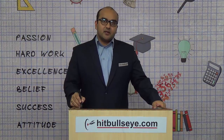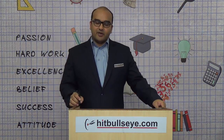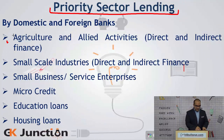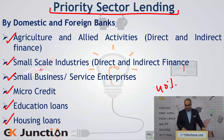The government of India understands that certain sectors of the economy need more support, and that is why it has fixed certain percentage amounts that the banks have to lend to various industries like agriculture, small scale industries, small business service enterprises, microcredit loans, education loans, and housing loans. Every bank in India, with some exceptions, has to give about 40% of its total loans within these sectors.